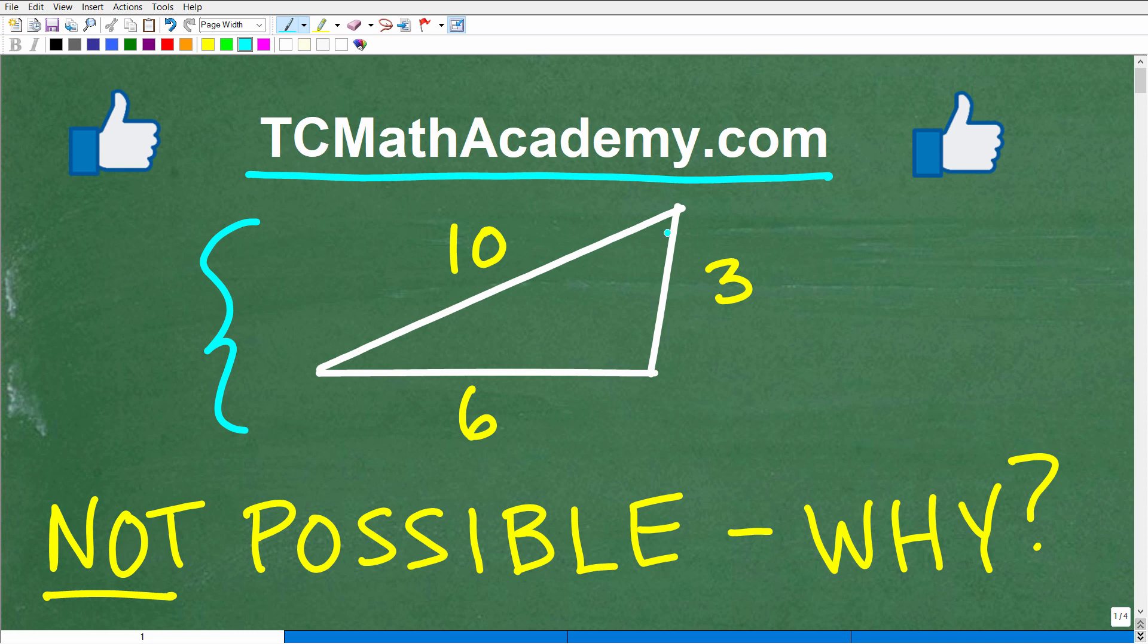In other words, this triangle here with these lengths is not possible. So that's a little bit of a hint. And why is that? There's a very direct reason why you cannot construct a triangle with these particular lengths.